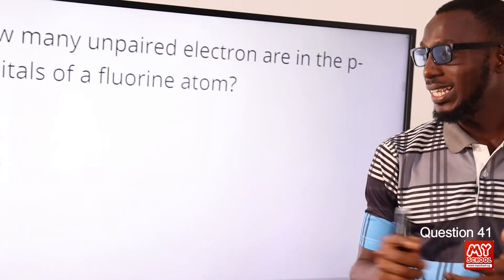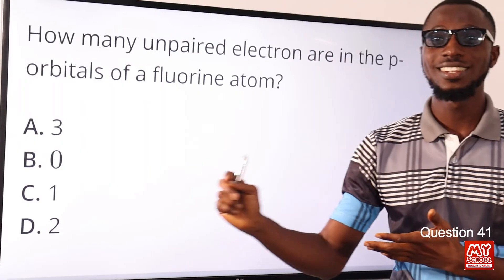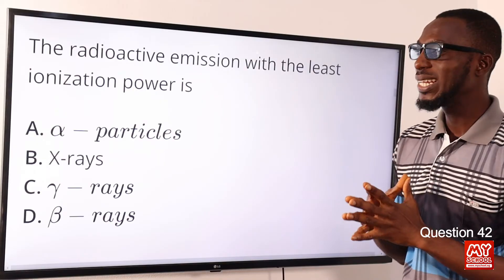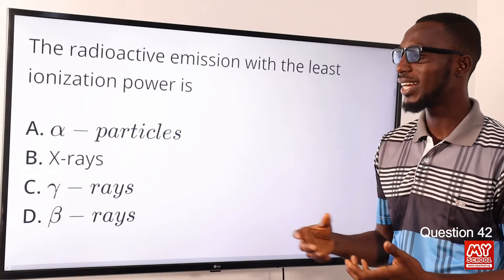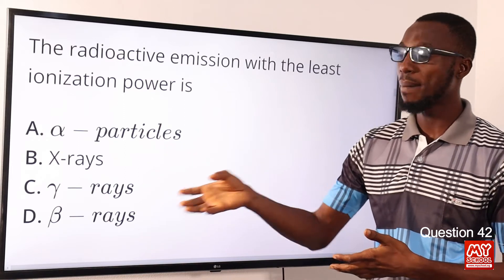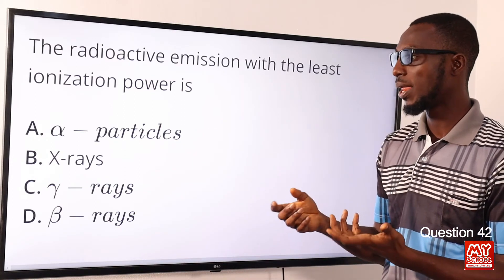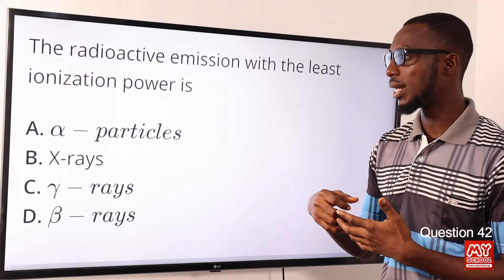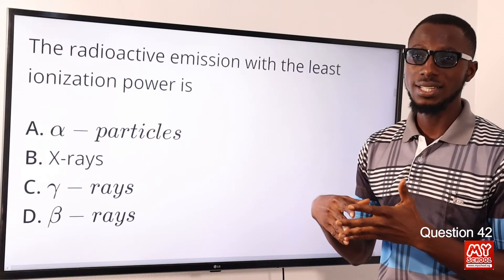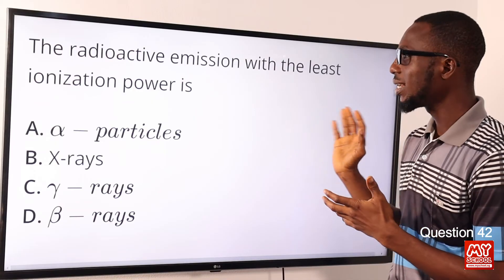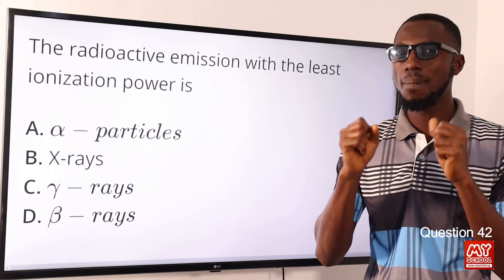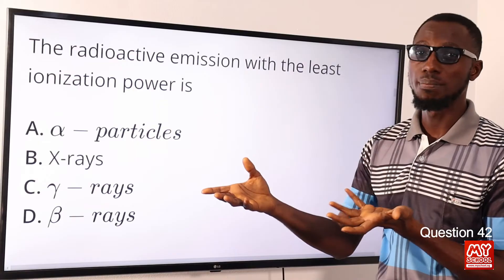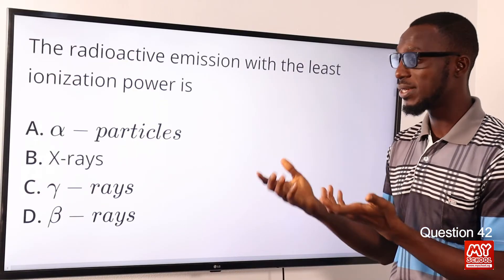Question 42: The radioactive emission with the least ionization power is what? That is gamma rays. Compared to alpha particles and beta particles, gamma rays are not particles — they are electromagnetic waves. They have no charge and no mass. Gamma rays have the least ionization power but the most penetrating ability. The correct option is option C for gamma rays.